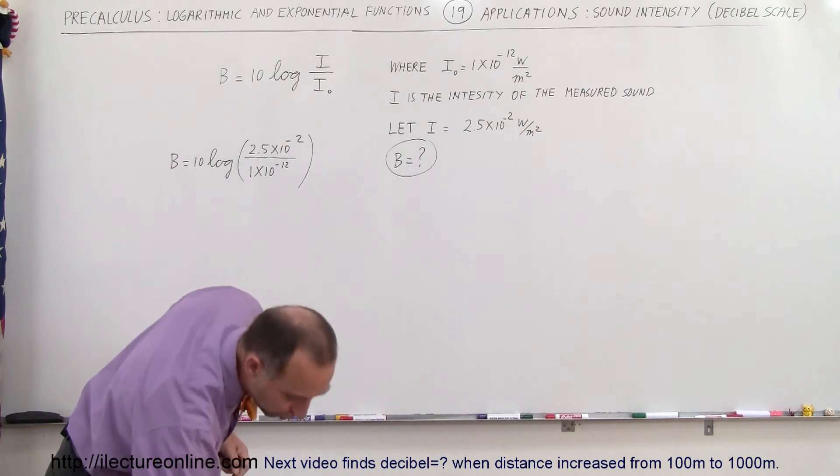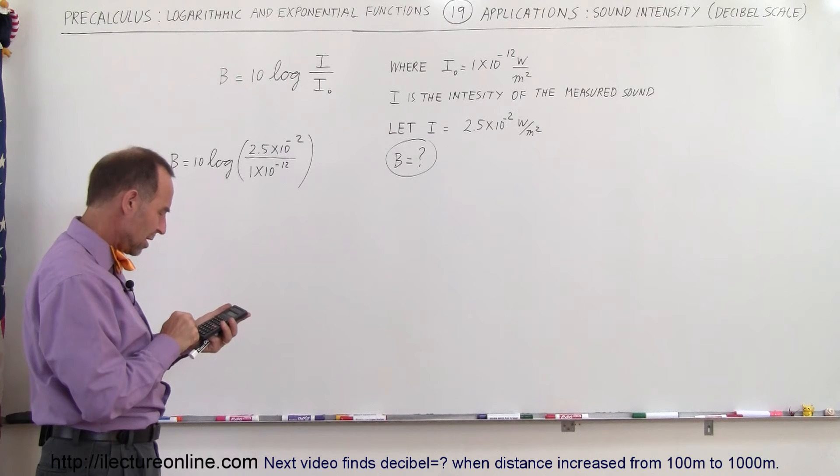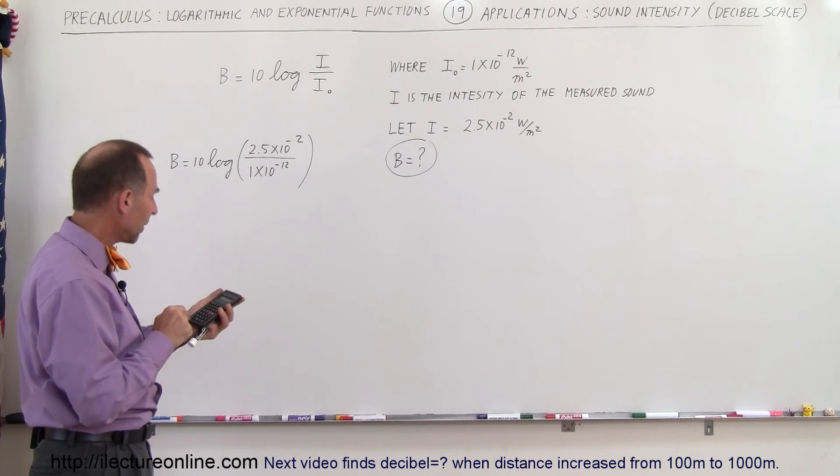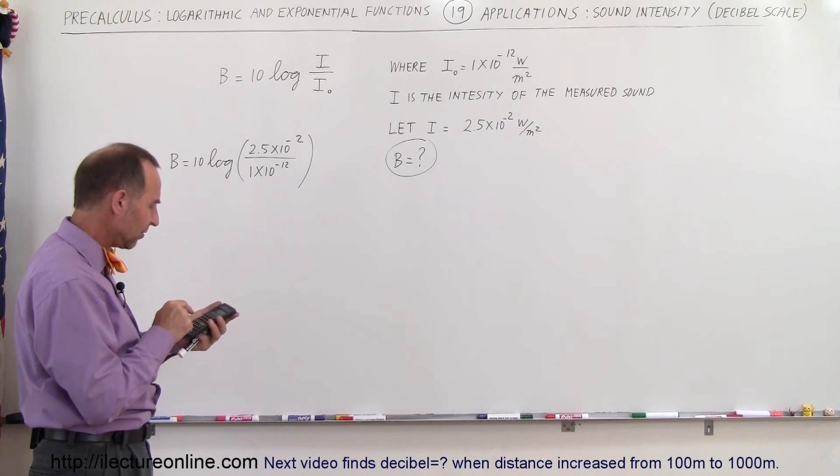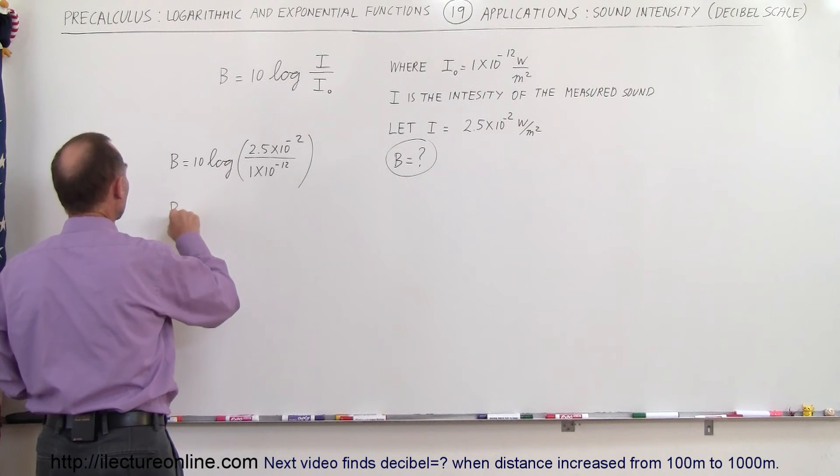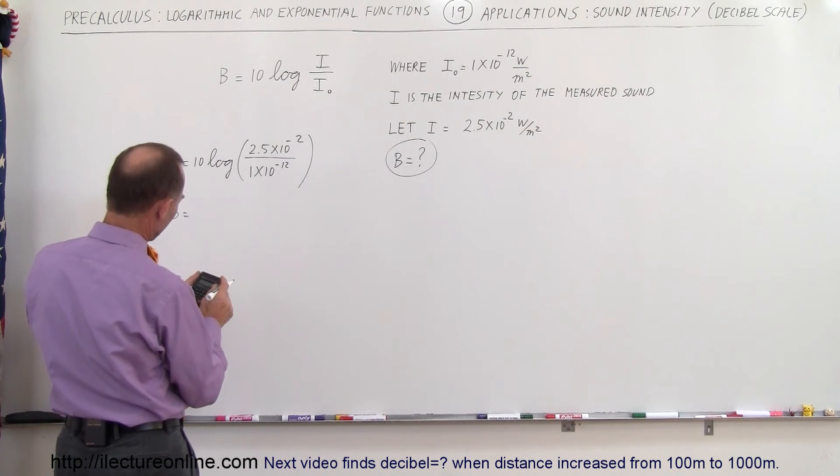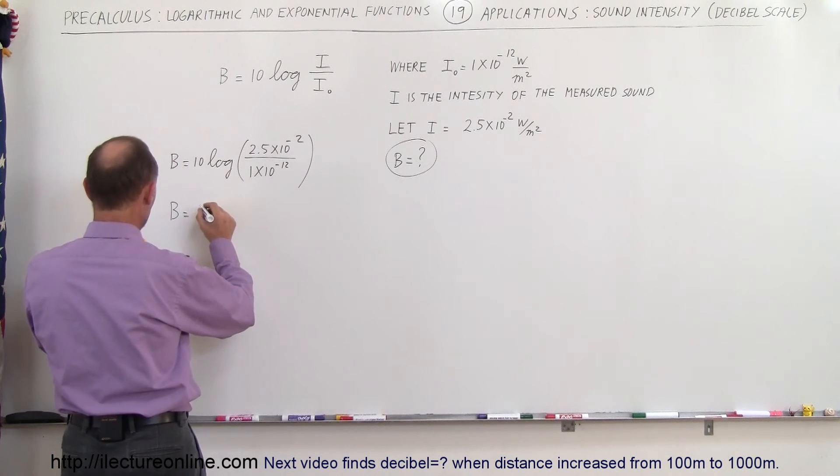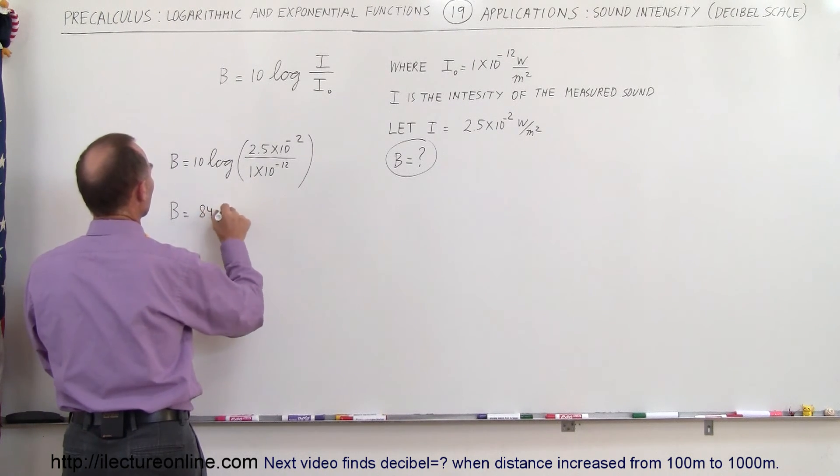So let's go ahead and get that ratio. That would be 2.5 e to the minus 2 divided by 1 e to the minus 12, and then we take the log of that. The decibel or the sound intensity in decibels would be equal to, let's round that off to 83.98, let's call it 84 decibels, round it off.